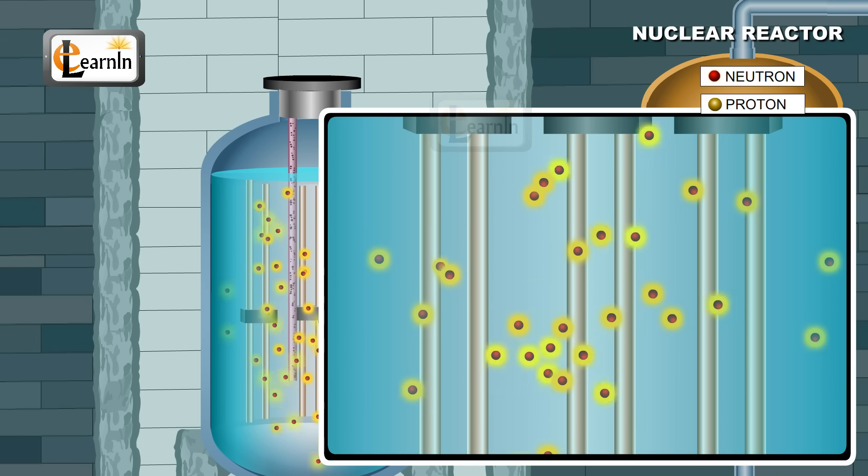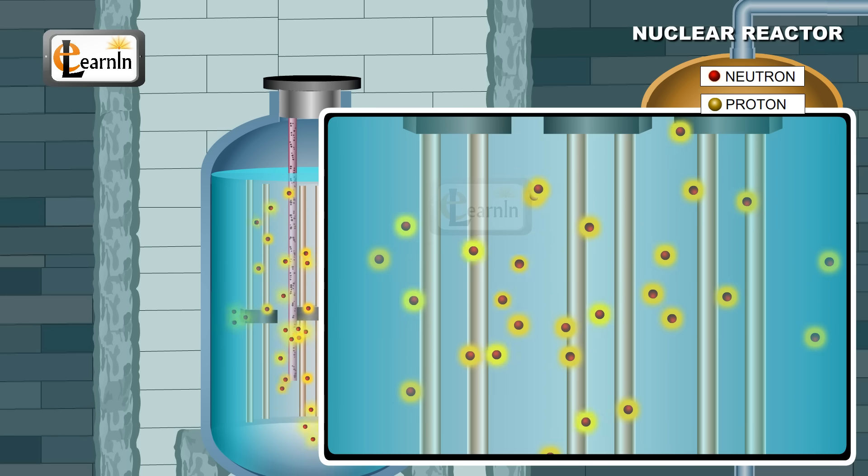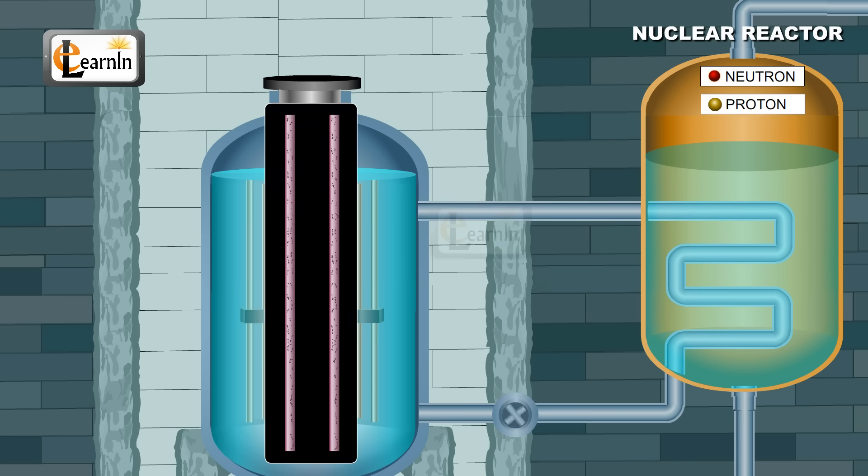By controlling the number of spare neutrons available at any given time, the rate of nuclear fission chain reactions can be controlled. This control on the fission reaction can be maintained using control rods.